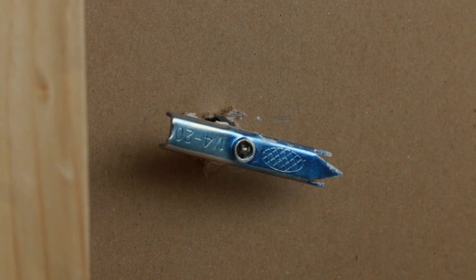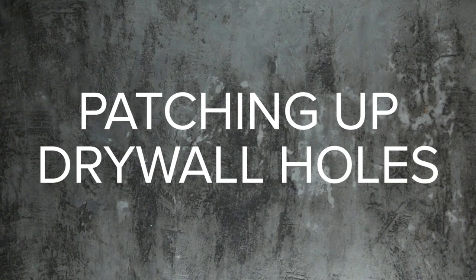Once everything has been removed from your wall, it's time to patch things up. For small holes, you're really only going to need three things: spackle, a putty knife, and some sandpaper. Patching up small holes is literally as easy as applying spackle onto the hole with a putty knife and then running the putty knife multiple directions to remove any extra spackle. It's literally that easy.